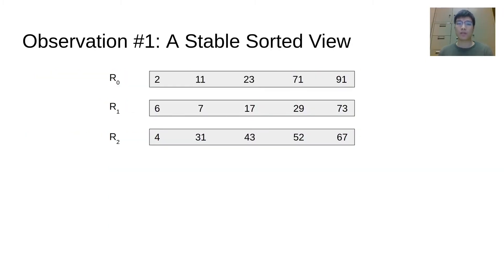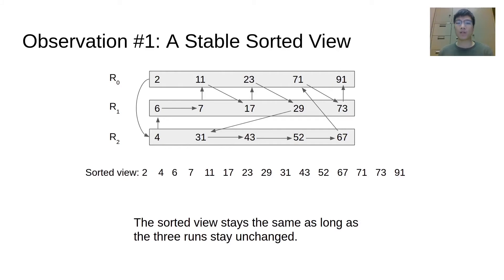We also have two observations. First, the sorted view is stable. For example, the sorted view of these three runs always starts from 2, 4, 6, and ends at 91. The sorted view remains the same as long as the runs stay unchanged. However, the sorted view is constructed at runtime and then discarded after the range query is finished. To avoid repeatedly rebuilding the sorted view, we could record the sequential access path of the view.